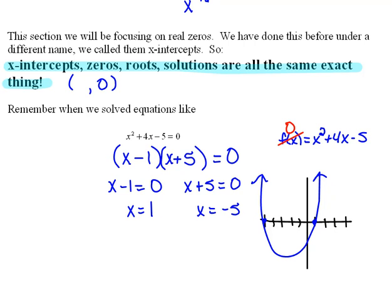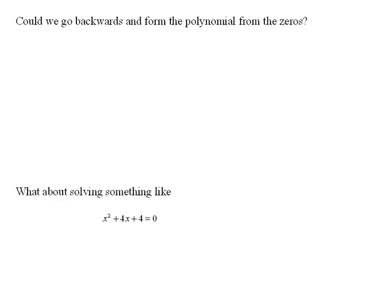All right. Now, if we can go from a function to the x-intercepts, we should be able to go backwards and form the polynomial. So if we were given a function, two x-intercepts or zeros, if we said x is 1 and x equals negative 5, find the polynomial that goes with that.